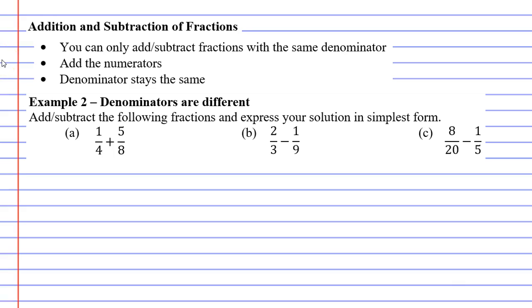Well looking at question A I'm going to take the first fraction one over four and I'm going to multiply the top and the bottom by two. Remember that the golden rule with fractions is that you can multiply or divide the top and the bottom of a fraction by the same number.